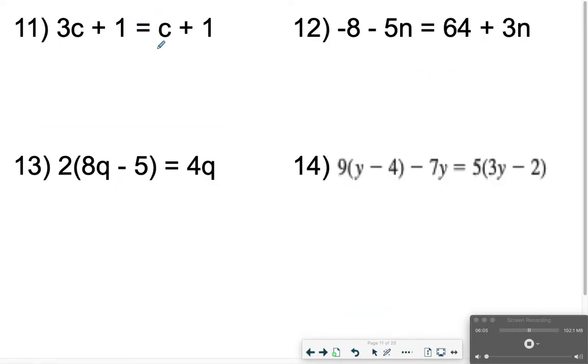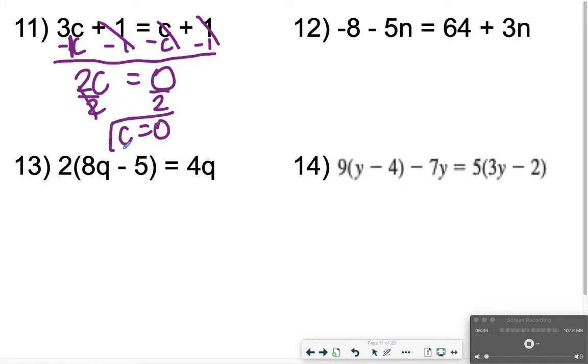11. This section is when you have variables on both sides. Remember, your main goal is just to get all variables to one side. So I'm going to move my c's to the left, and then I'm also going to move my constants to the right. 3c minus c is equal to 2c. Plus 1 minus 1 cancels out to give me 0. c minus c cancels out to give me 0. And then if I don't have anything over here and everything is canceled out, it's still 0 on this side. Dividing both sides by 2, c is equal to 0 for number 11.